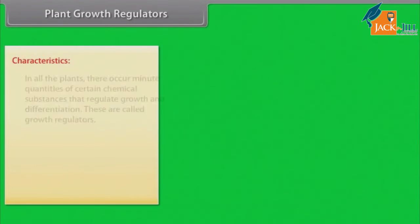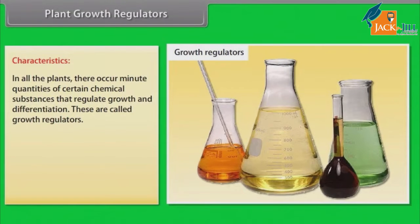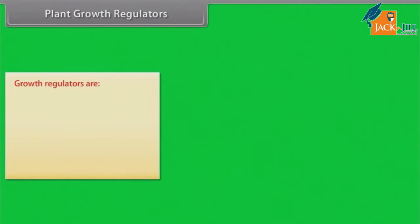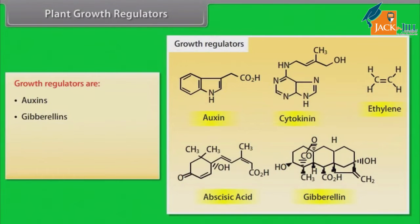Plant Growth Regulators: In all plants, there occur minute quantities of certain chemical substances that regulate growth and differentiation; these are called growth regulators. A growth regulator may be defined as an organic substance produced naturally in plants, controlling growth and other functions at a site remote from its place of production, in minute quantities. These are auxins, gibberellins, cytokinins, ethylene, and abscisic acid.